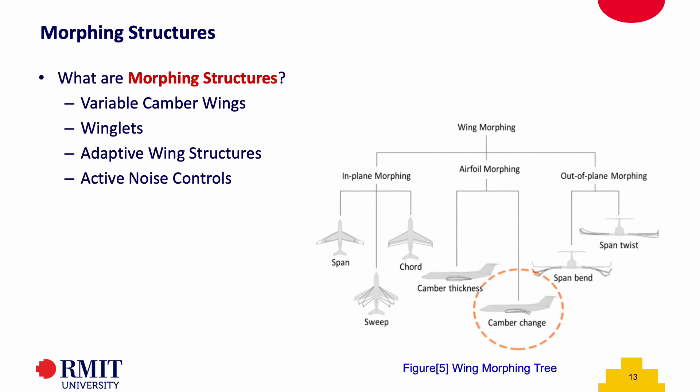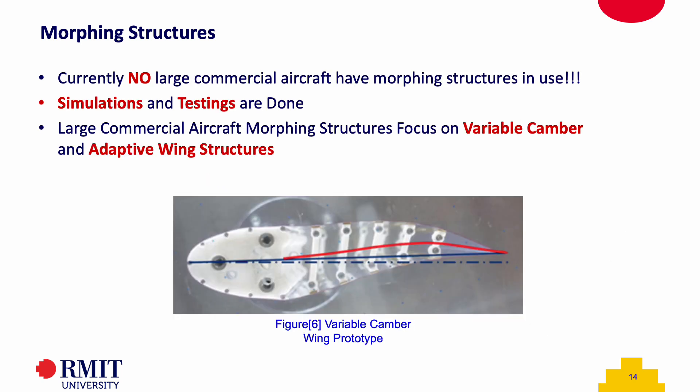Let's start with morphing structures. Morphing structures can include structures such as variable camber wings, winglets, adaptive wing structures, and active noise controls. These structures allow for adjustments of the curvature of the wings or trailing edge by changing the cambers, the shape of the winglets, or the shape of the inlet of the engine to achieve improvements in performance, reduce fuel consumption, reduce CO2 emissions, and reduce the carbon footprint. Currently, there are no large commercial aircraft having morphing structures in use. However, simulations and testing are being done on prototypes to integrate them into large commercial aircraft.